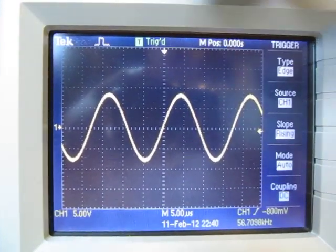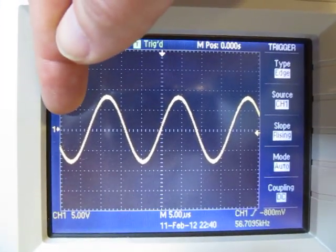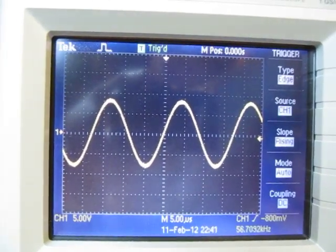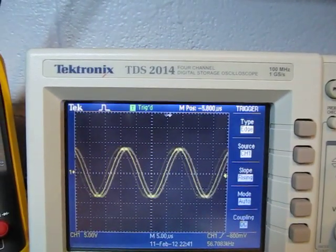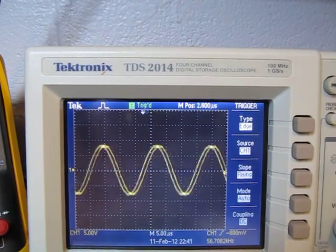...unlike the analog scope where the trigger really is kind of at the left edge of the screen most of the time. Here I can see pre-trigger and post-trigger. And the horizontal position control here allows me to move that back and forth.